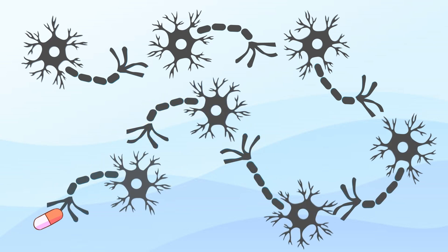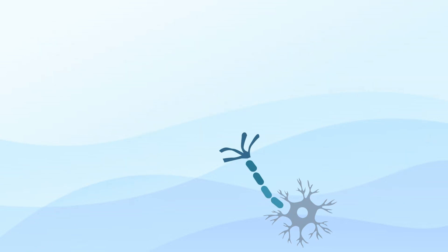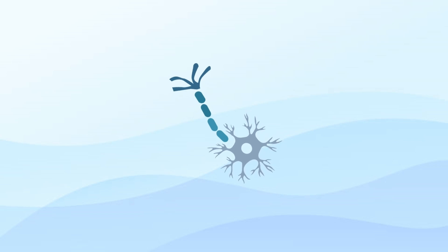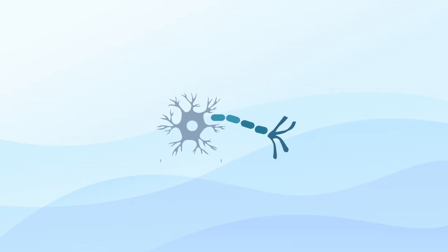To better comprehend this, let's delve into the structure of a neuron. A neuron comprises three main regions: the cell body, axon, and axon terminals. Here, we'll focus on the axon.